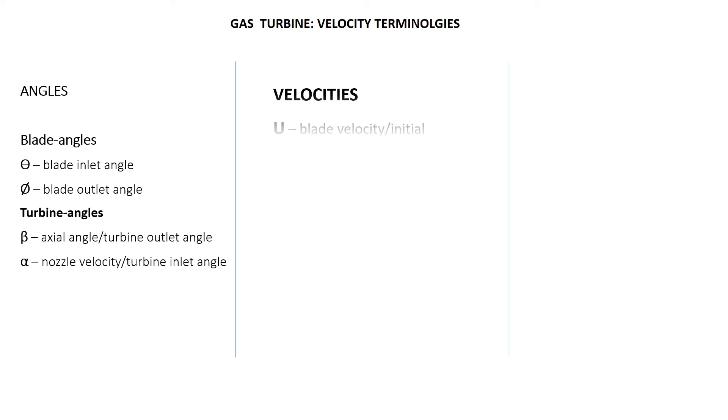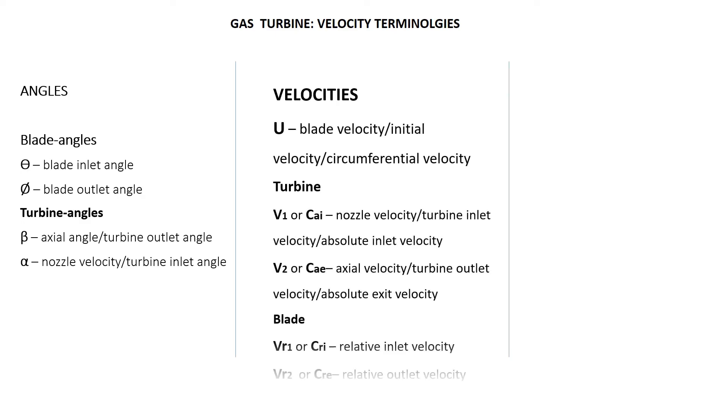Let's look at the terminologies used in different books to describe the velocities and angles. As you can see, there are synonyms to all velocities and different symbols, which are all applicable.